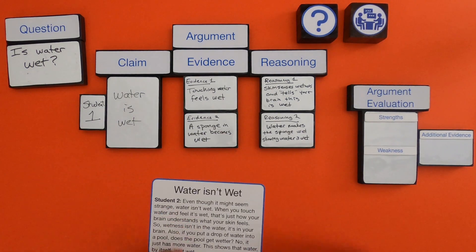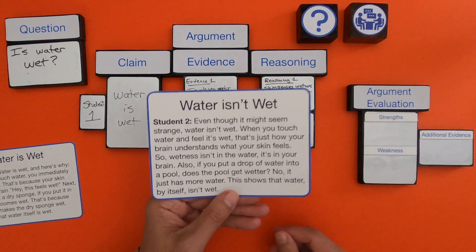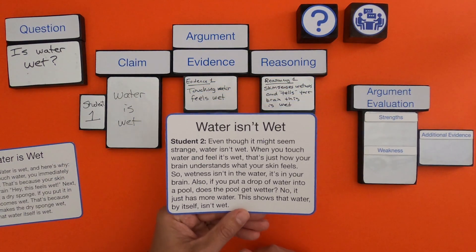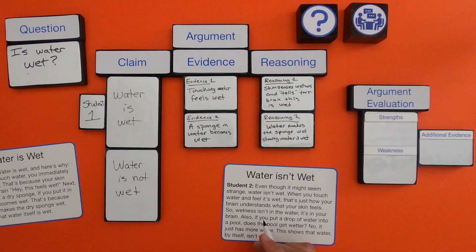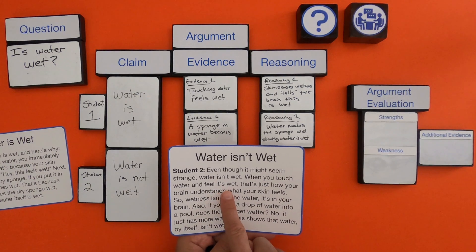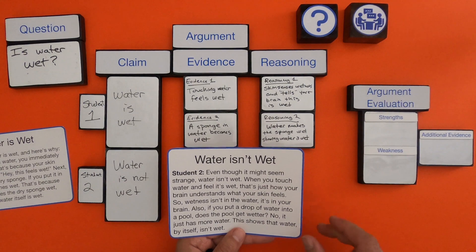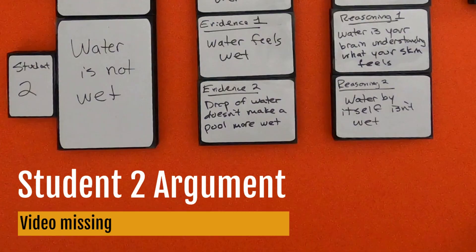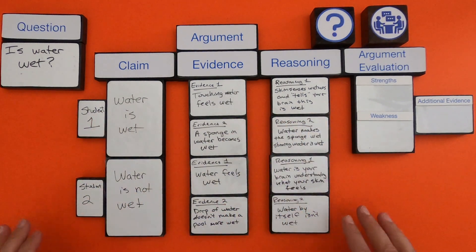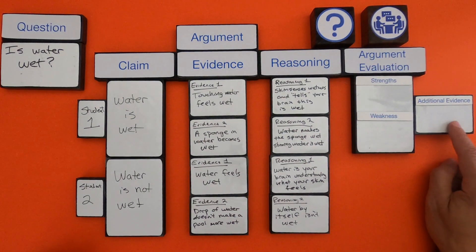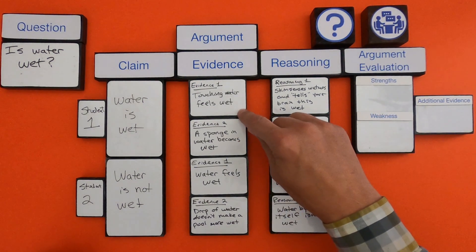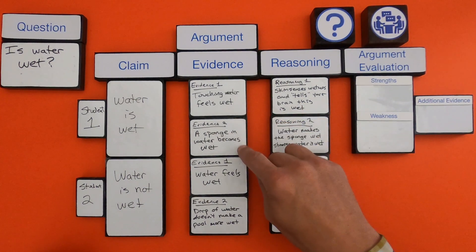Now let's go through and do the same with student two's argument: water isn't wet. You could pause the video and try this on your own. Student two says: 'When you touch water and feel it's wet, that's just how your brain understands what your skin feels.' Now that we've laid out the structure of both arguments, we want to evaluate them. We've analyzed the structure; now we look at strengths, weaknesses, and additional evidence.